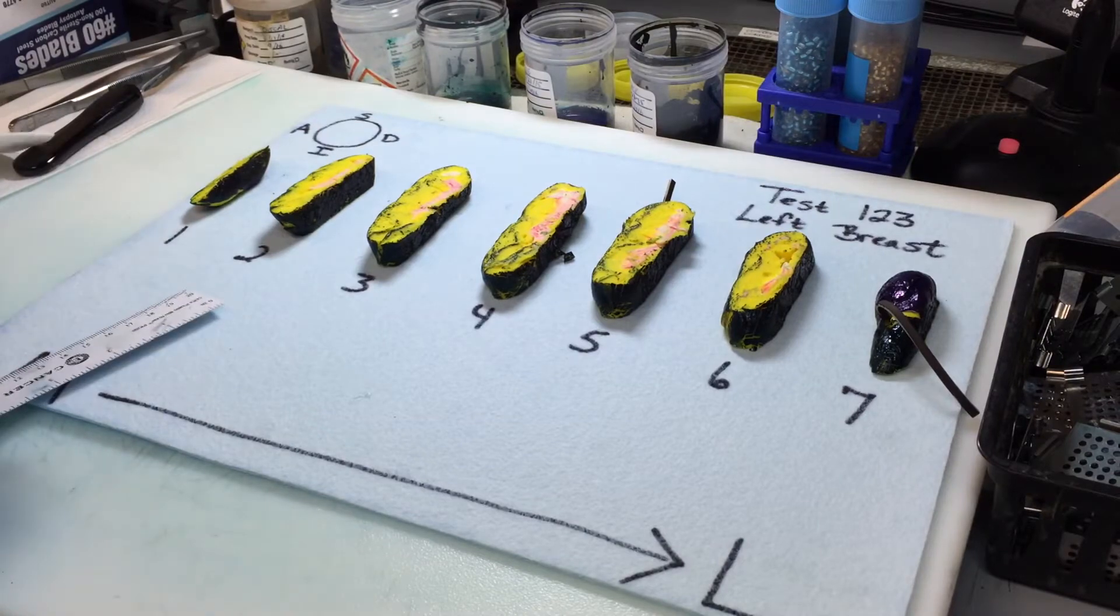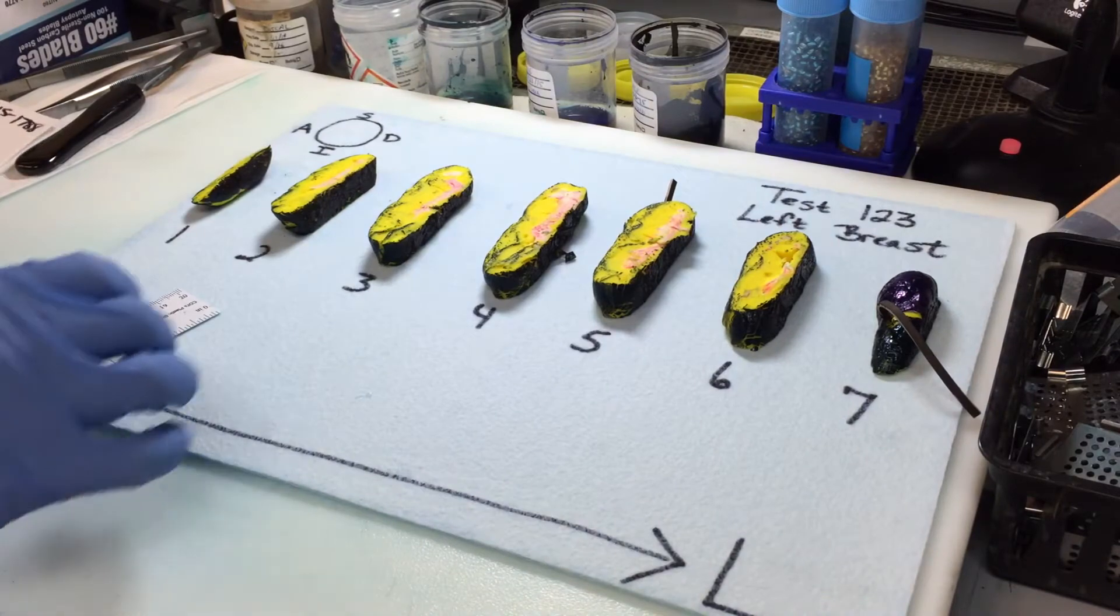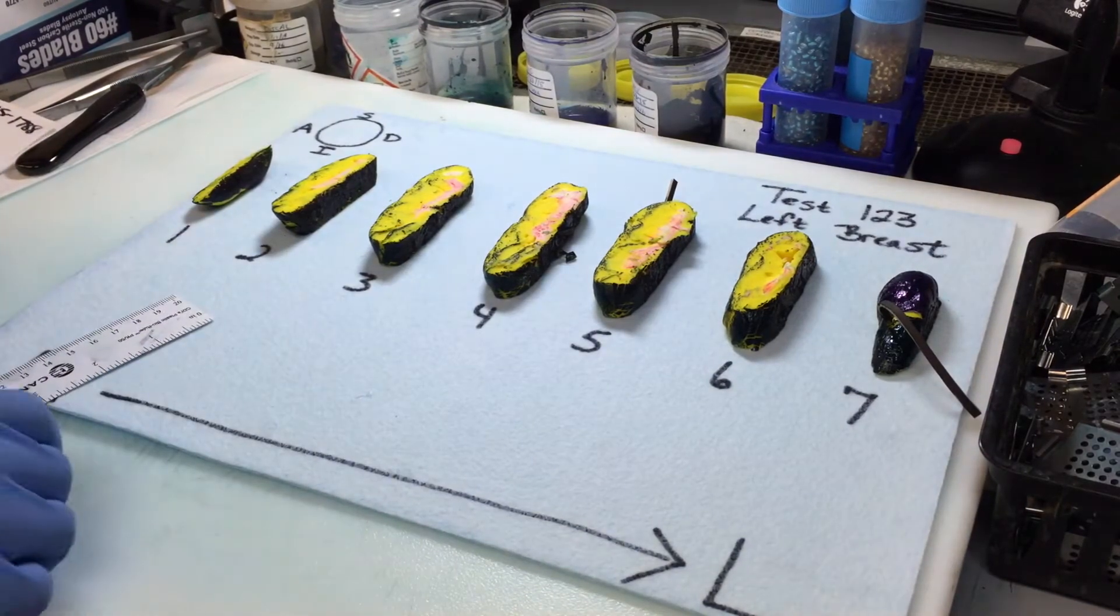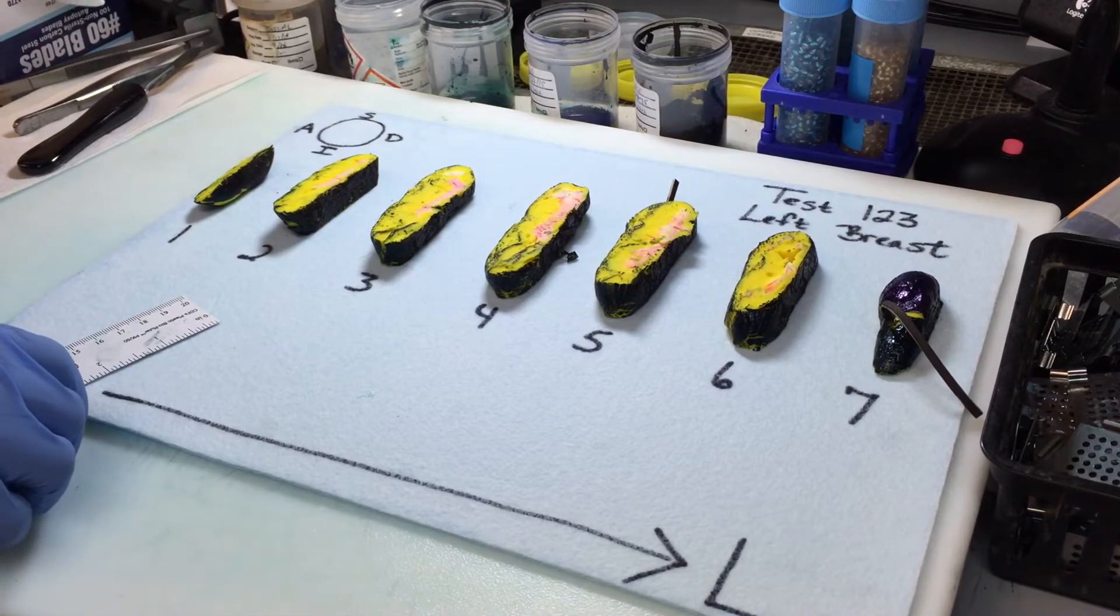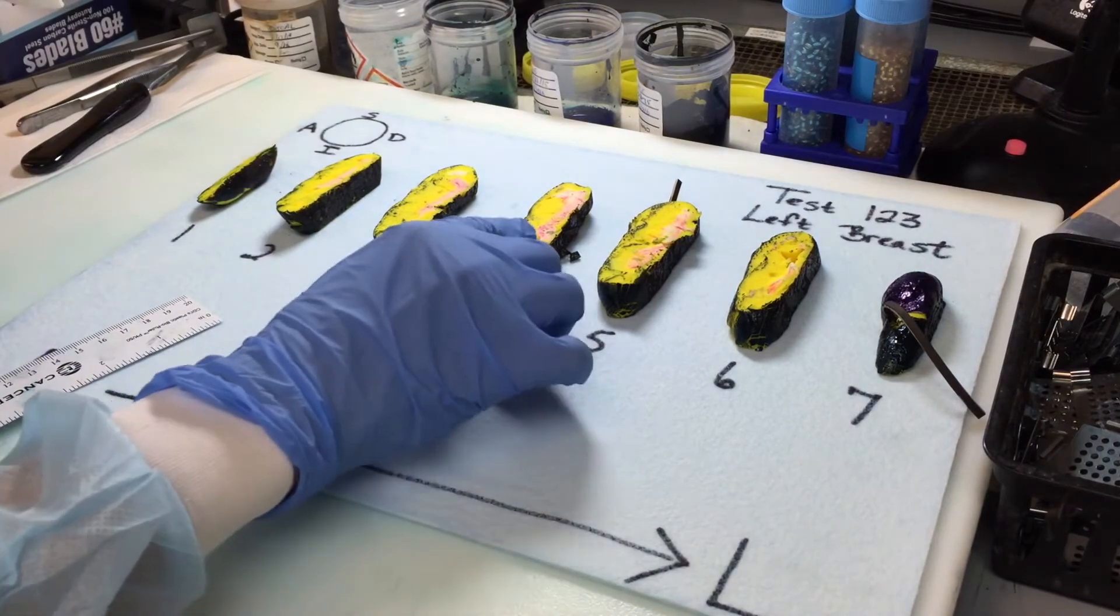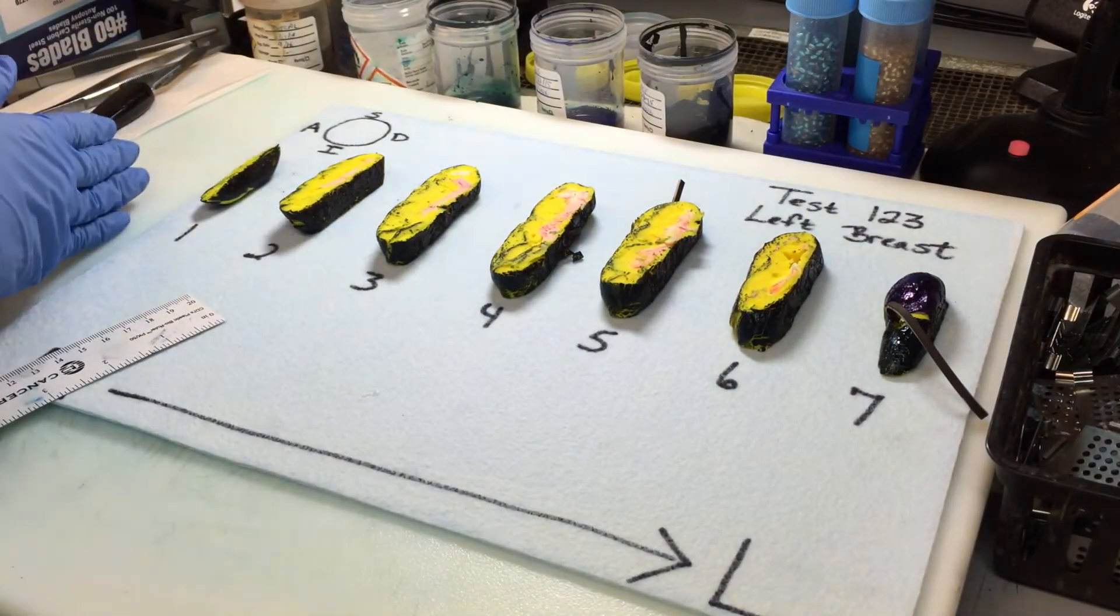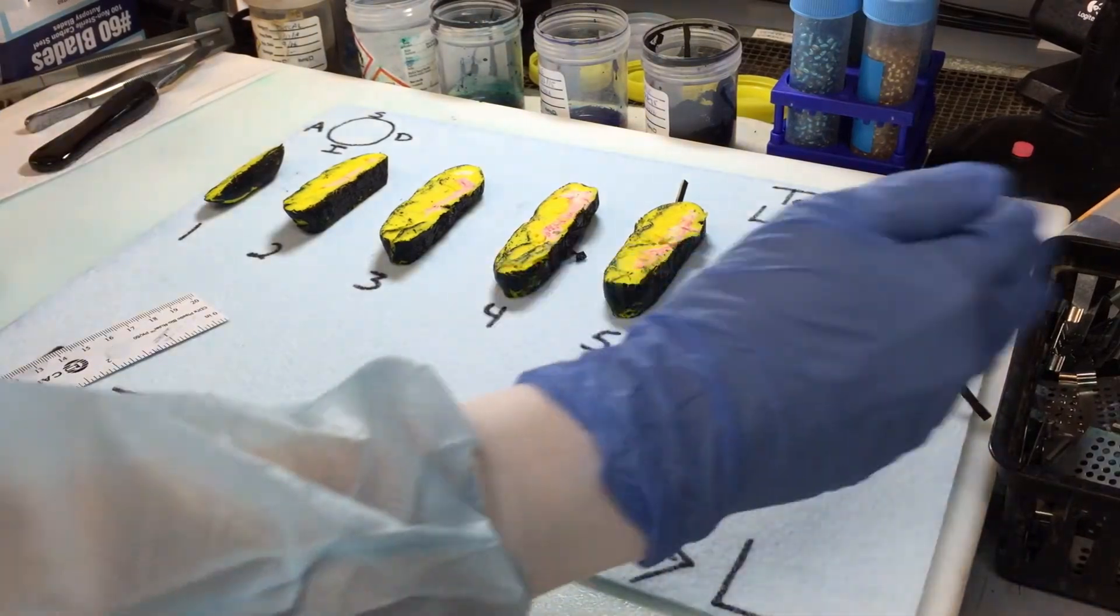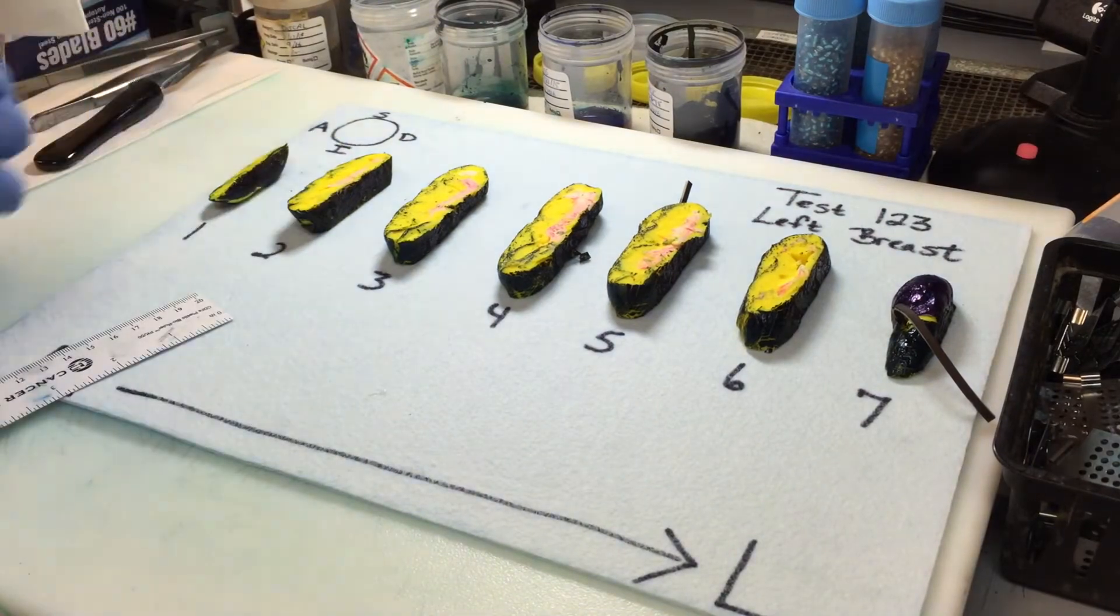So we also want to note the tumor from each margin. So you look to see on which slice it's the closest. And we've measured for the deep margin on slice three, it is only 0.1 centimeter away. The superior margin we can see is 0.5 centimeters away. The inferior margin is 1.2 centimeters away. And then from the medial margin, it's 1 centimeter as well as the lateral margin is 1 centimeter. And the anterior is 1.2 centimeters.